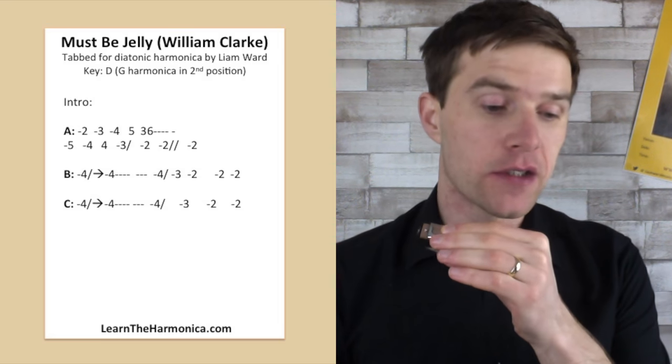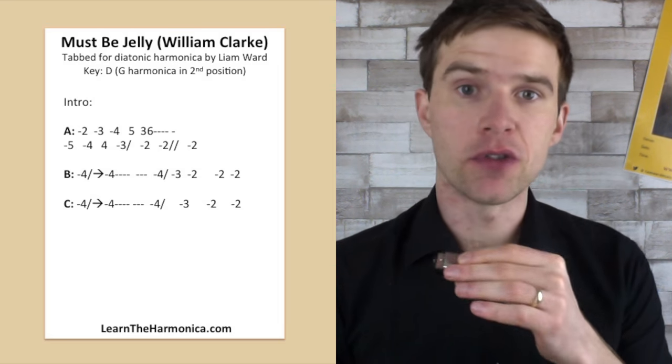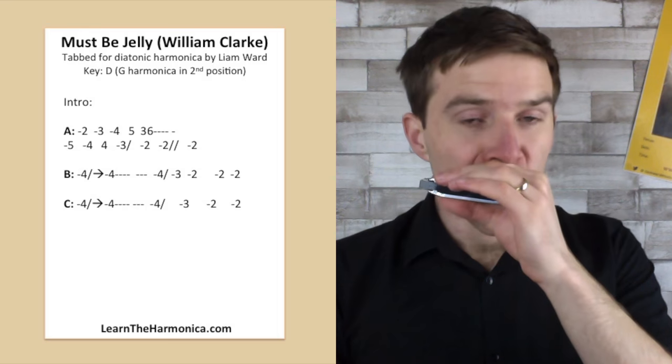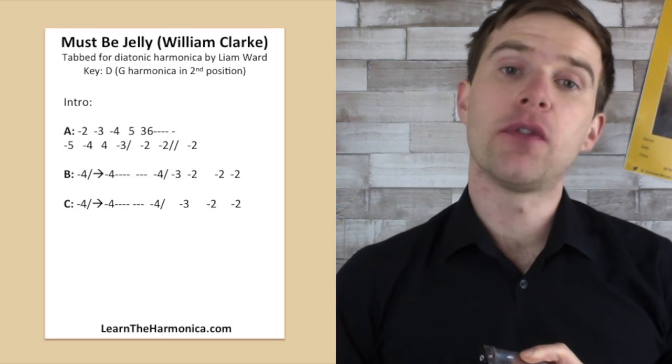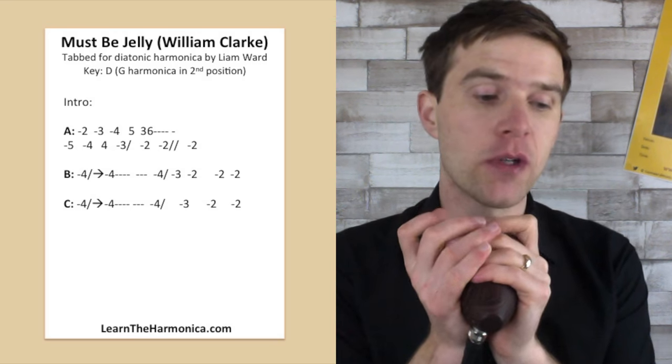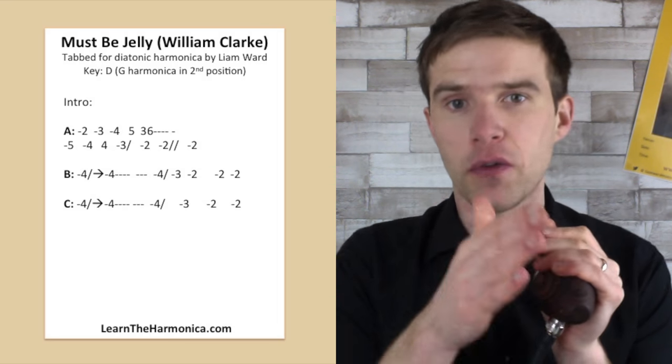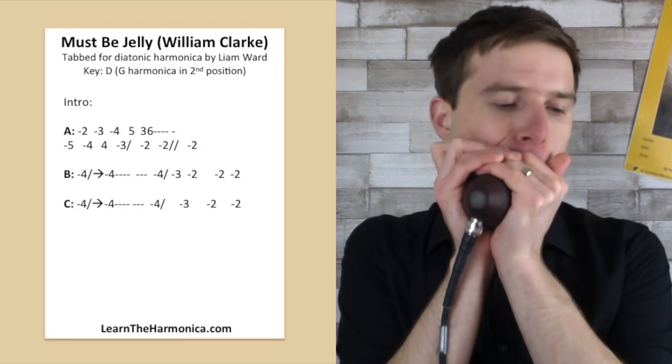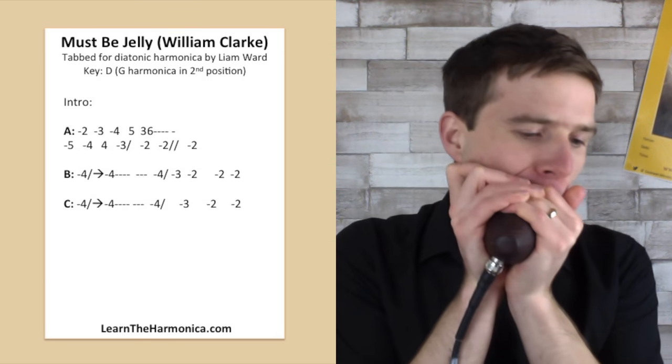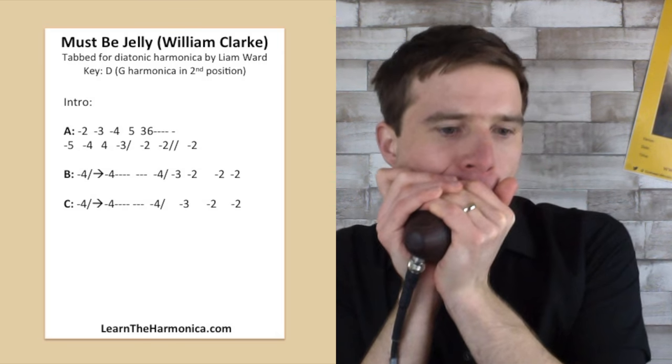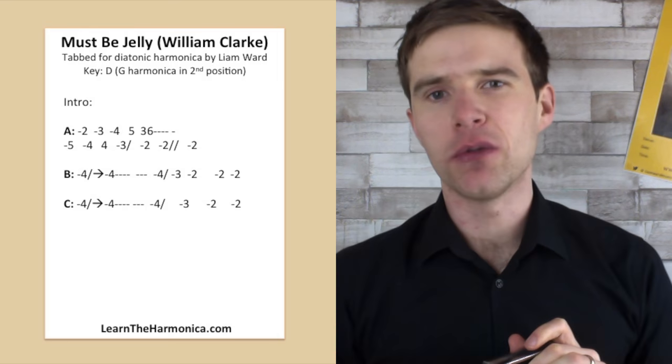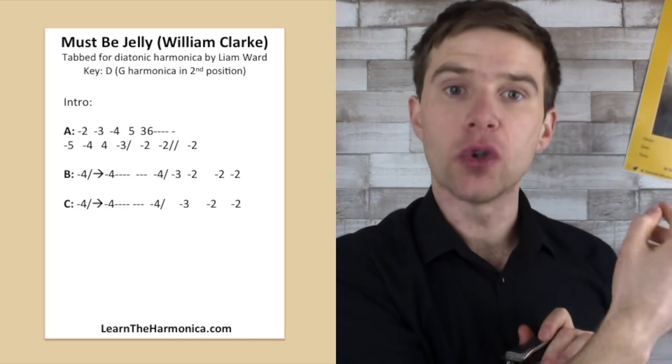Line C goes something like this. It's actually very similar to line B, but it is slightly different, so we will talk about it. Okay, so he's holding the four-draw bend and releasing it to a four-draw, holding that for seven beats again. He's doing his wahs in a different place. So he actually does it on beat four and then beat six of that seven-beat holding of that note. Excuse me, I'll go again. One, two, three, four. And then the rundown, he's doing the same set of notes almost. He's doing a four-draw bend, three-draw, two-draw, and he plays a two-draw once more.